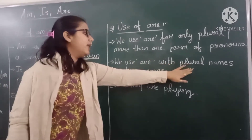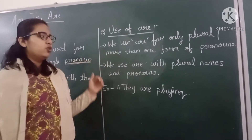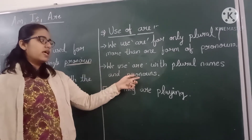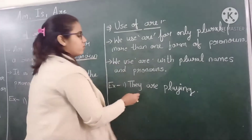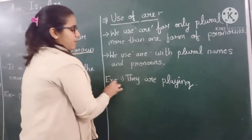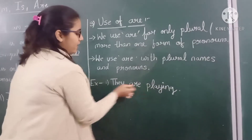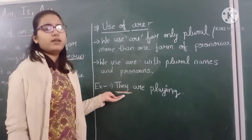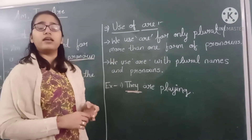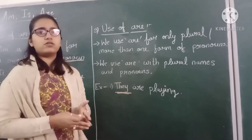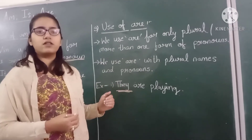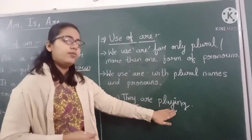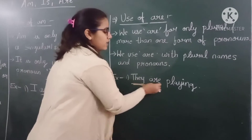We use 'are' with plural names and pronouns. Names more than one — you use 'are'. Pronouns more than one — you use 'are'. For example: 'They are playing.' 'They' is a pronoun. When many children or anyone plural is playing, we use 'they'. So: 'They are playing' — here we used 'are'.